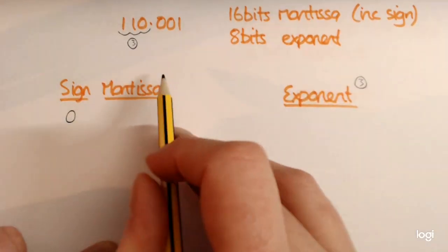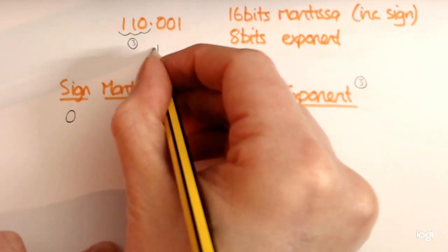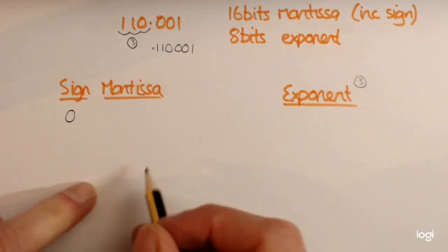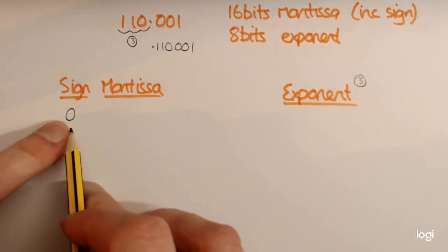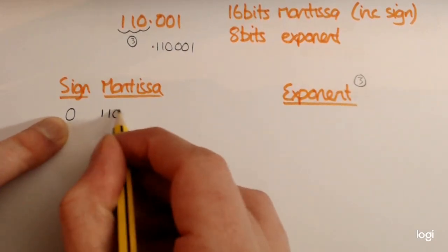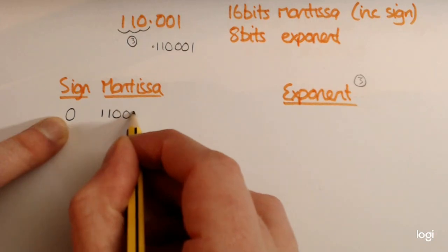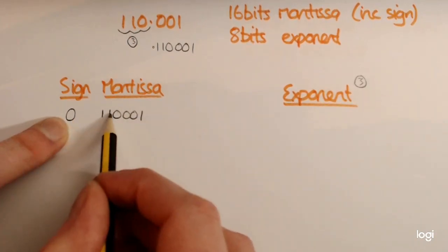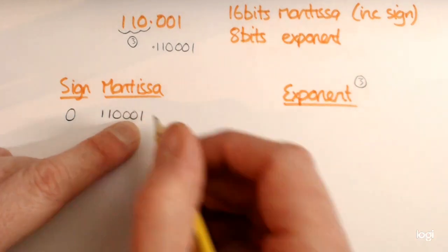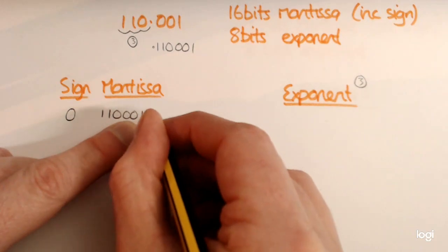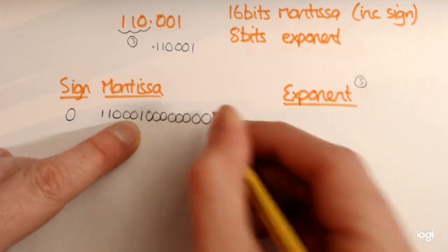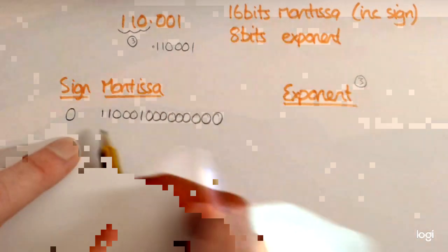We've now got the number looking like 1, 1, 0, 0, 0, 1. The first bit is already occupied by the sign, so the mantissa bits are: 1, 1, 0, 0, 0, 0, 0, 1 — that's 9 bits so far. It needs to be 16 altogether, so we pad with another 7 zeros to make up the full 16 bits for the mantissa.